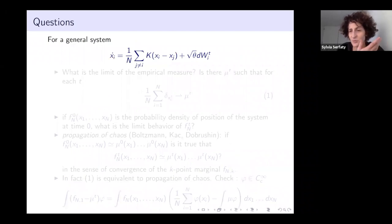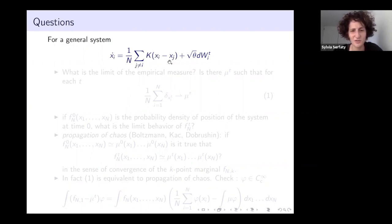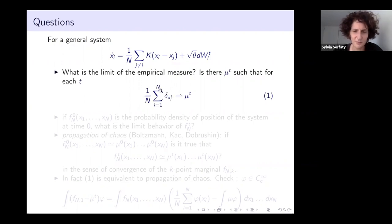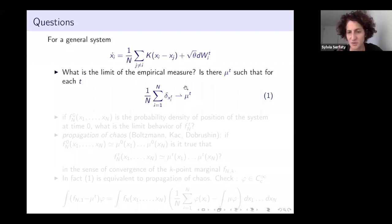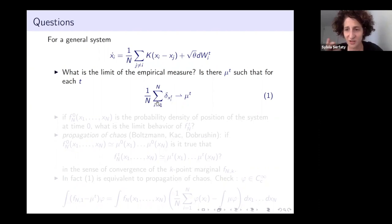Starting from the general question: if you have Xi-dot equals an average force with a force kernel K, possibly with noise, what are the questions you want to ask? Well, what is the limit of the empirical measure of the particles? If Xi(t) are the particle locations at time t, you form the empirical measure and ask whether it converges to some mu(t) solving some PDE.